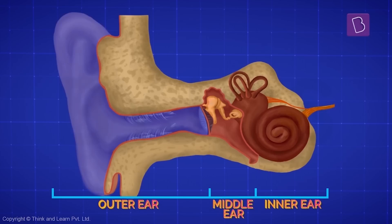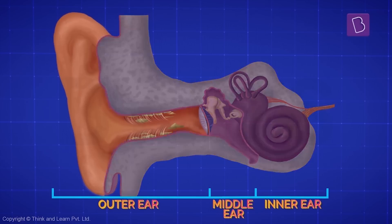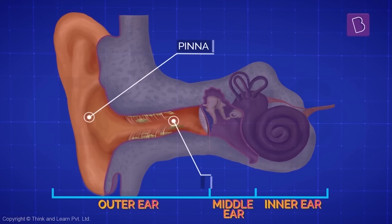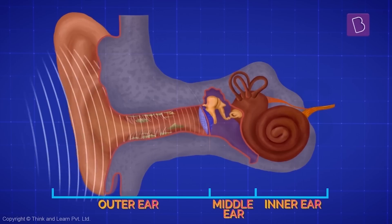Now let's start moving. We will have to name each of these parts. The flaps are called the pinna and the tube is called the ear canal. The pinna actually helps direct the sound from the outside into the ear canal.